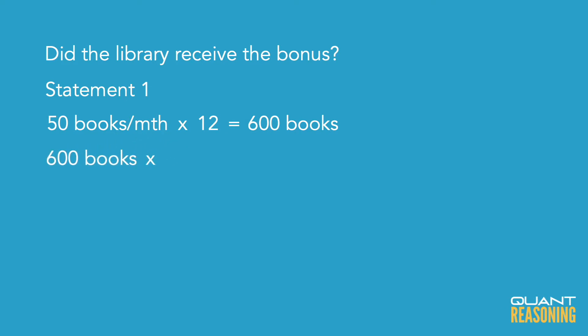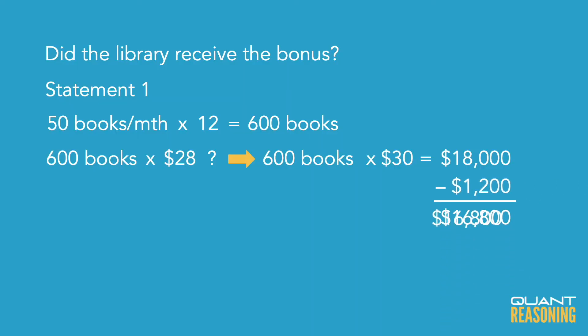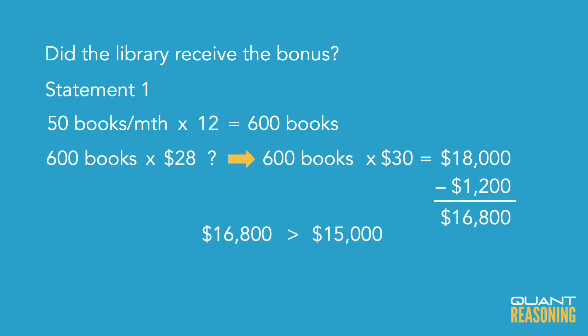The way I would do that is 600 times 30 — overshooting a bit — then subtract 600 twice for the overcounting. 600 times 30 is 18,000. Taking away 600 twice brings me down to 16,800, which is clearly more than 15,000. So statement one is sufficient on its own.